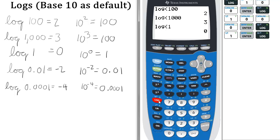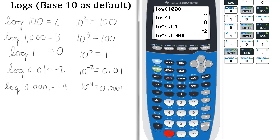Now 2 more logs. Let's take the log of 0.01. There we go, it's negative 2. And let's take, lastly, the log of 0.0001.